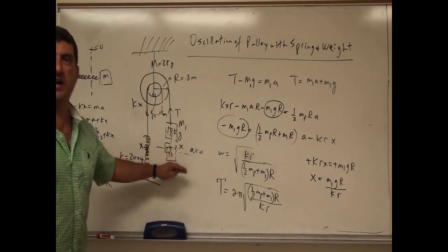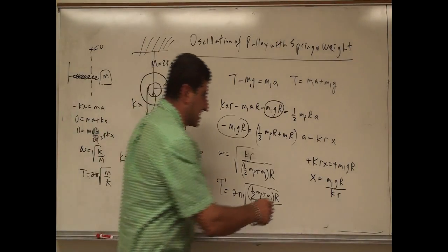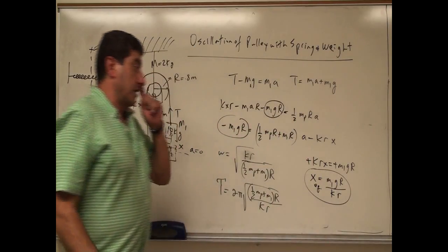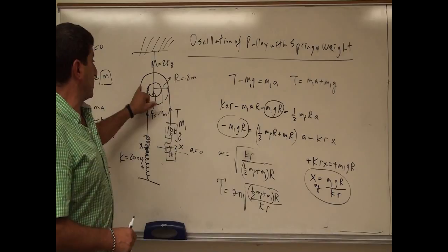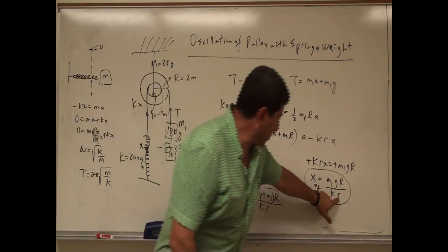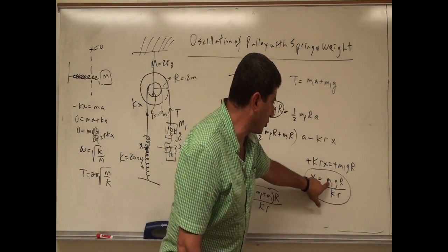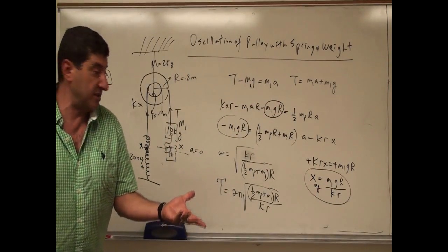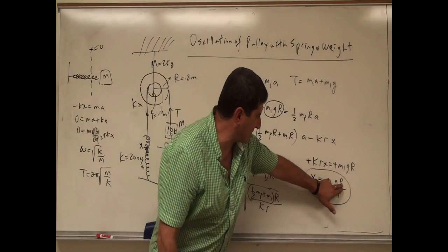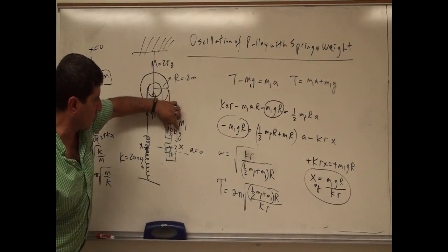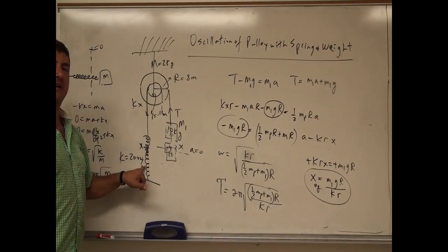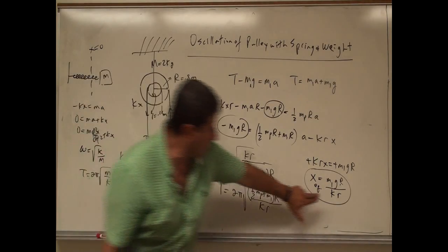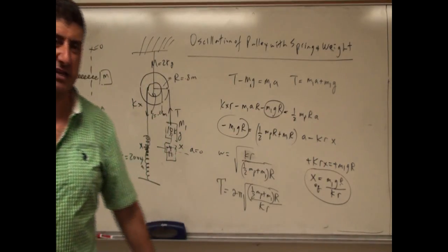That is the new equilibrium position — the initial stretch amount beyond which if you stretch the spring more, it oscillates around that new equilibrium. If both the spring and weight were wrapped around the same big R, the r's would cancel and the new equilibrium position would simply be M1g over k — the weight divided by the spring constant — which makes physical sense.